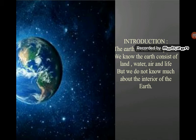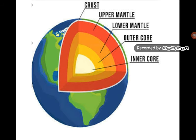Temperature increases with depth, all the way to about 12,000 degrees Fahrenheit at the Earth's inner core. The internal structure of Earth consists of three parts: core, mantle, and crust.